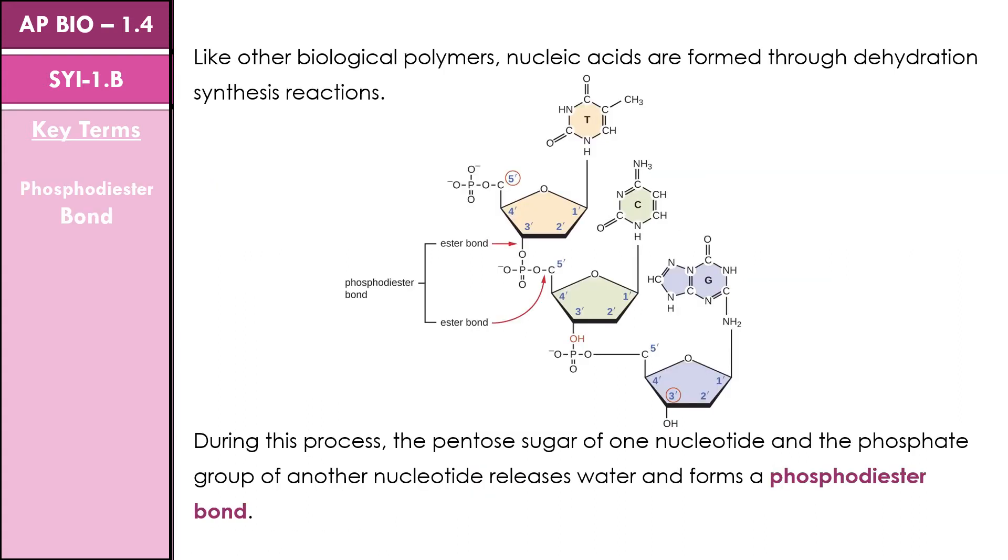During the formation of a nucleic acid, new nucleotides are added to an existing chain, one at a time. The pentose sugar in the last nucleotide of the existing chain and the phosphate of a new nucleotide undergo a dehydration synthesis, or condensation reaction, and the resulting linkage is called a phosphodiester bond.